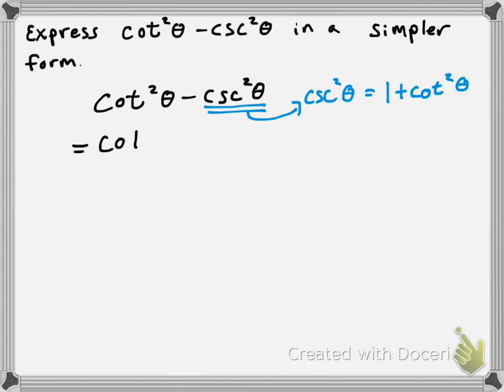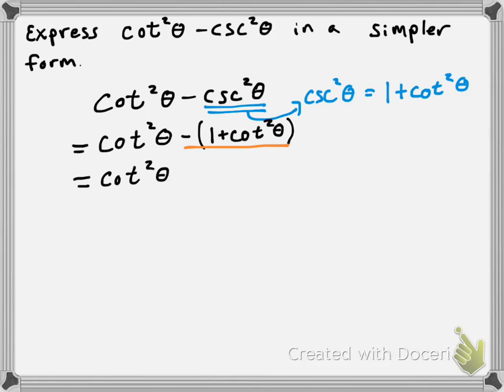So I can replace cosecant squared of theta with one plus cotangent squared of theta. That gives me cotangent squared of theta minus, instead of cosecant squared of theta, one plus cotangent squared of theta. Since we are subtracting one plus cotangent squared of theta, I can distribute the negative — that gives us cotangent squared of theta minus one minus cotangent squared of theta. The cotangent squared terms cancel, and that just leaves me with negative one. So cotangent squared of theta minus cosecant squared of theta simplifies to negative one.